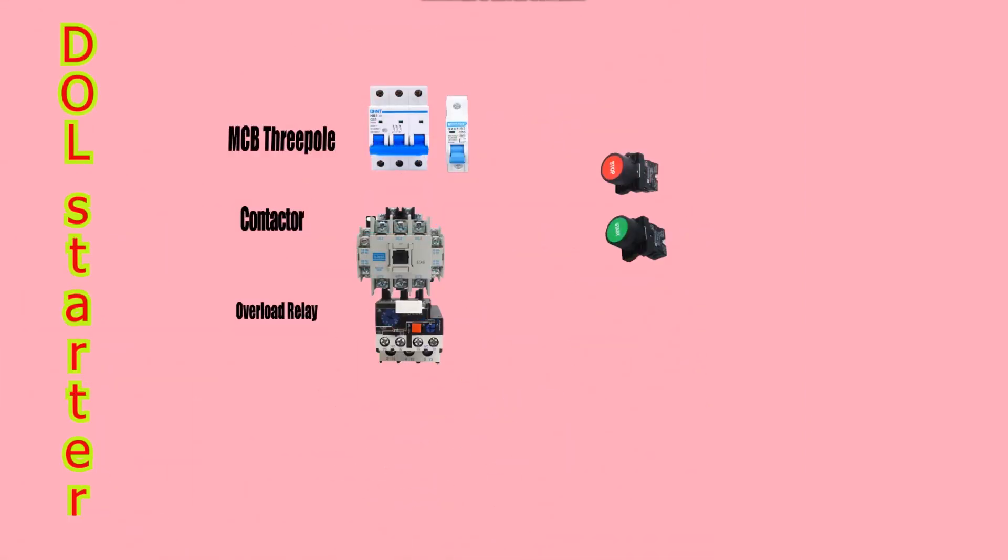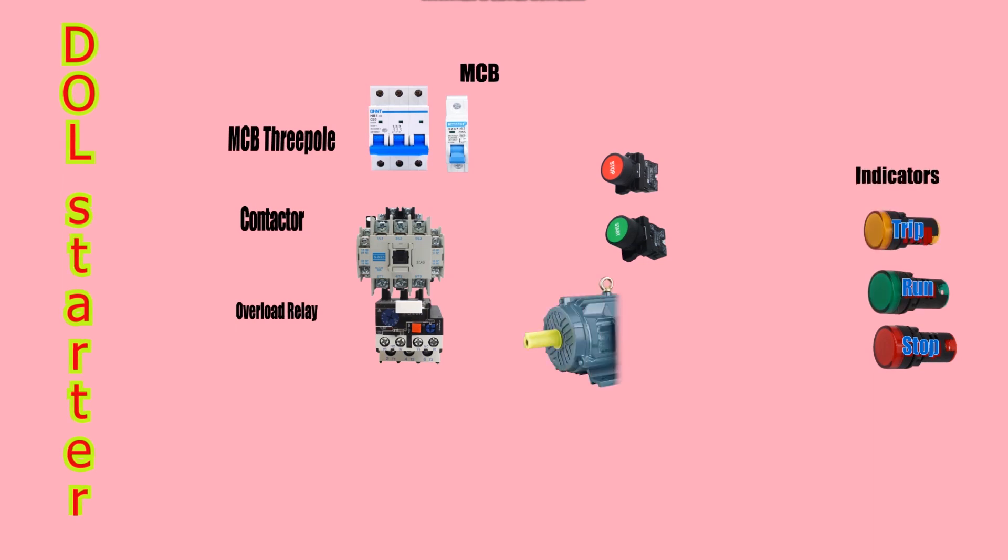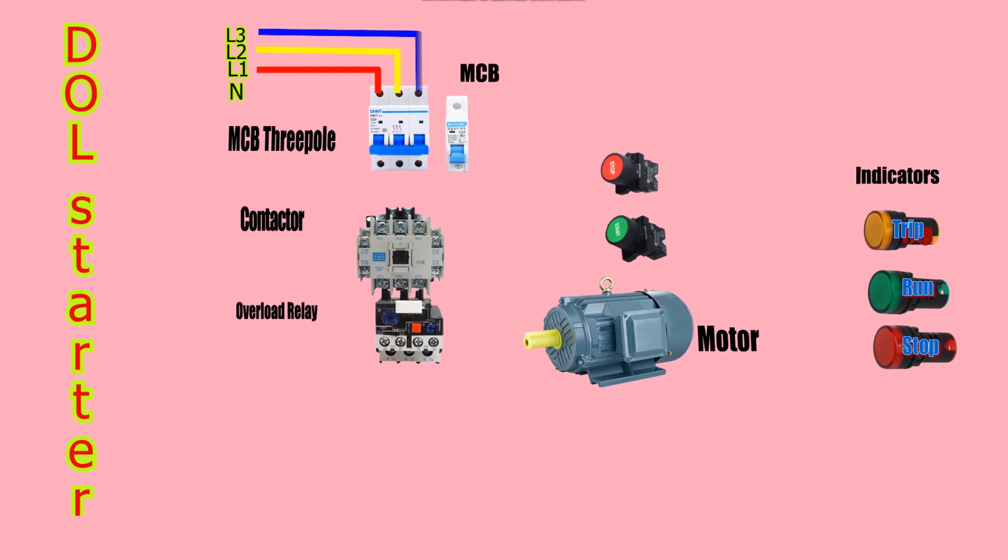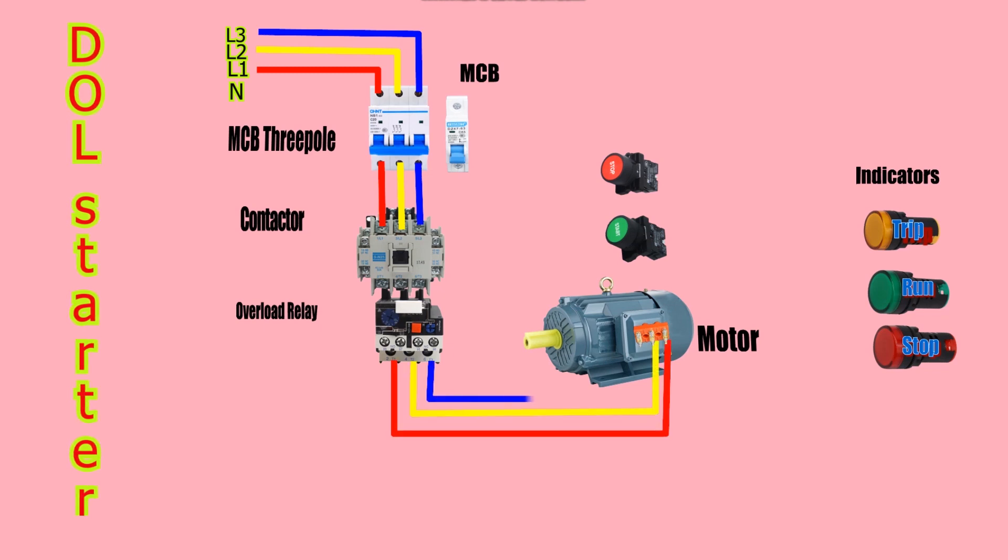The three-phase supply lines L1, L2, and L3 are connected to the three-pole MCB, and its output is linked to the contactor. The supply line then goes through the overload relay before reaching the induction motor. These components are connected in series to ensure efficient operation.